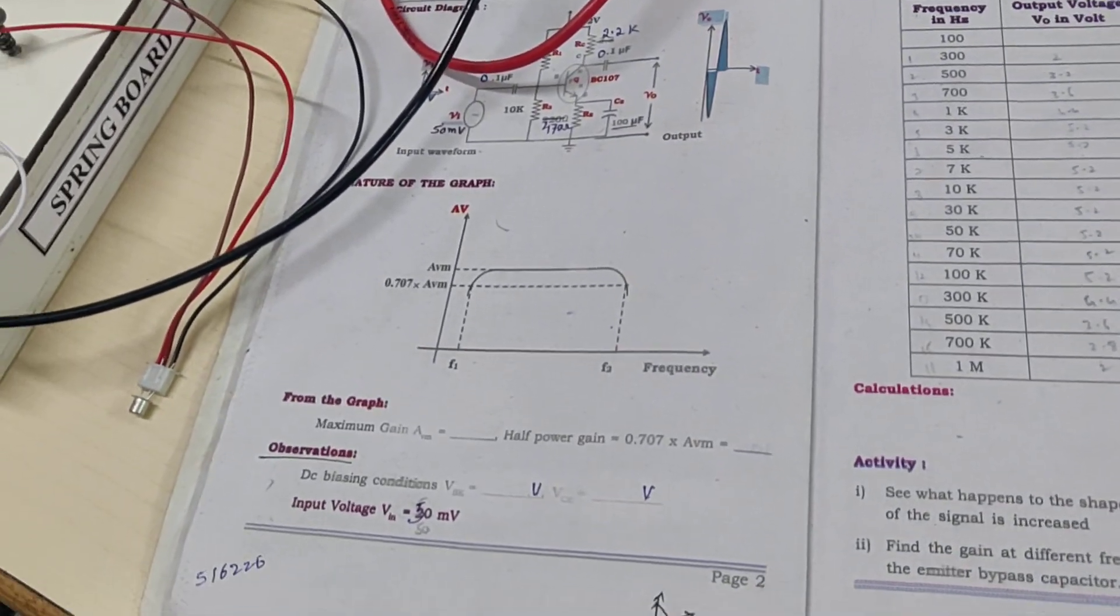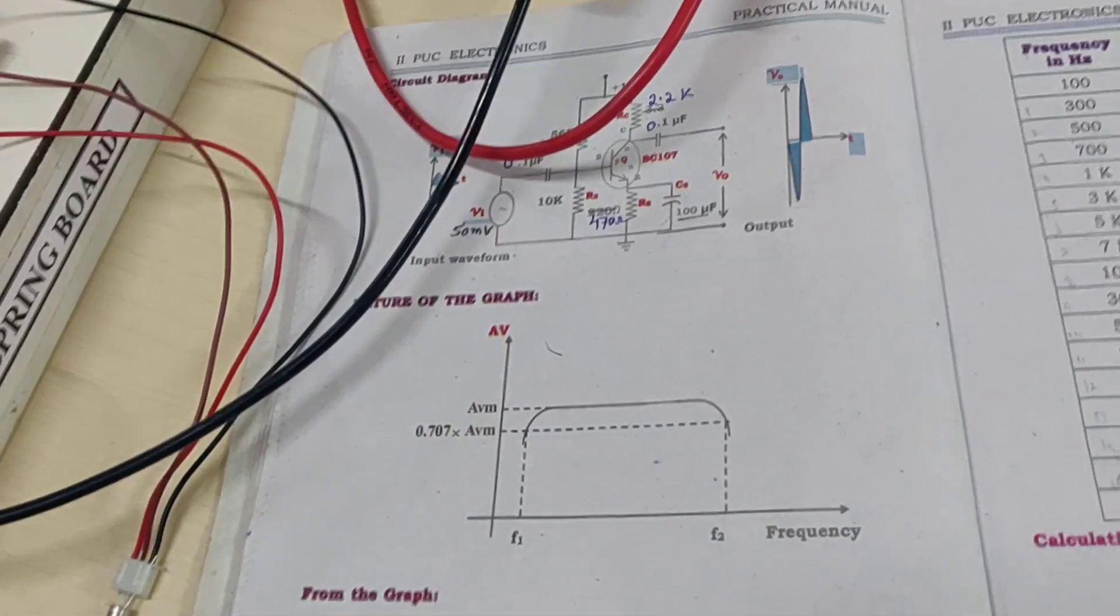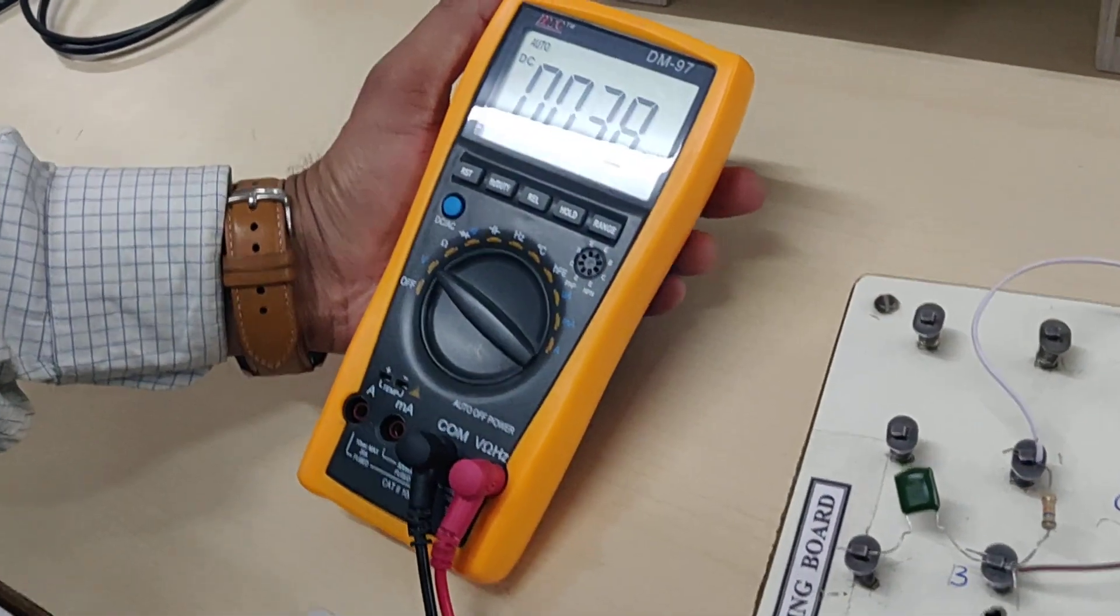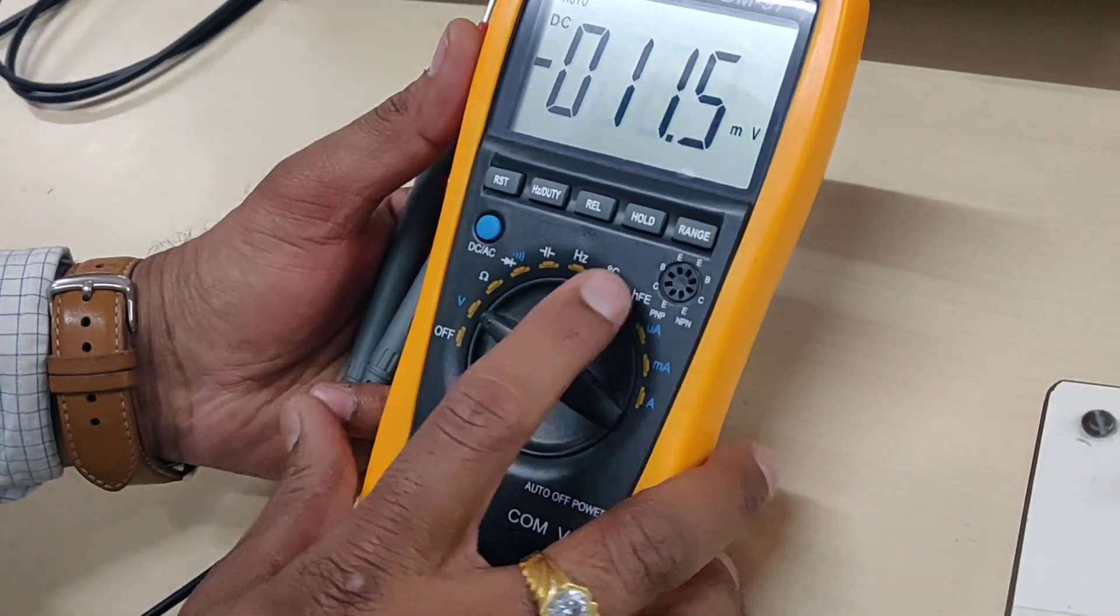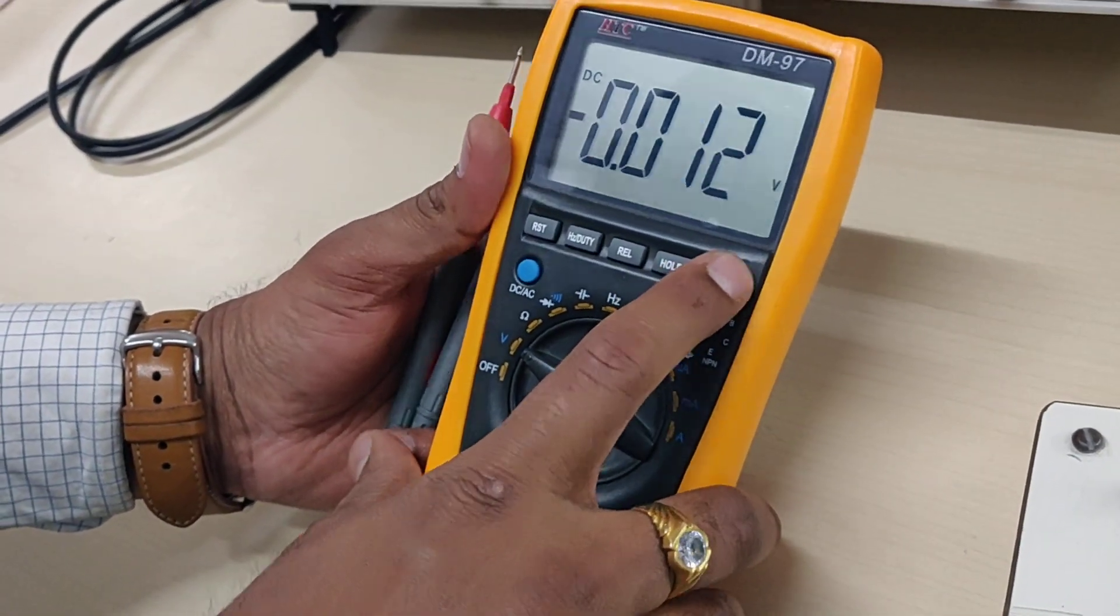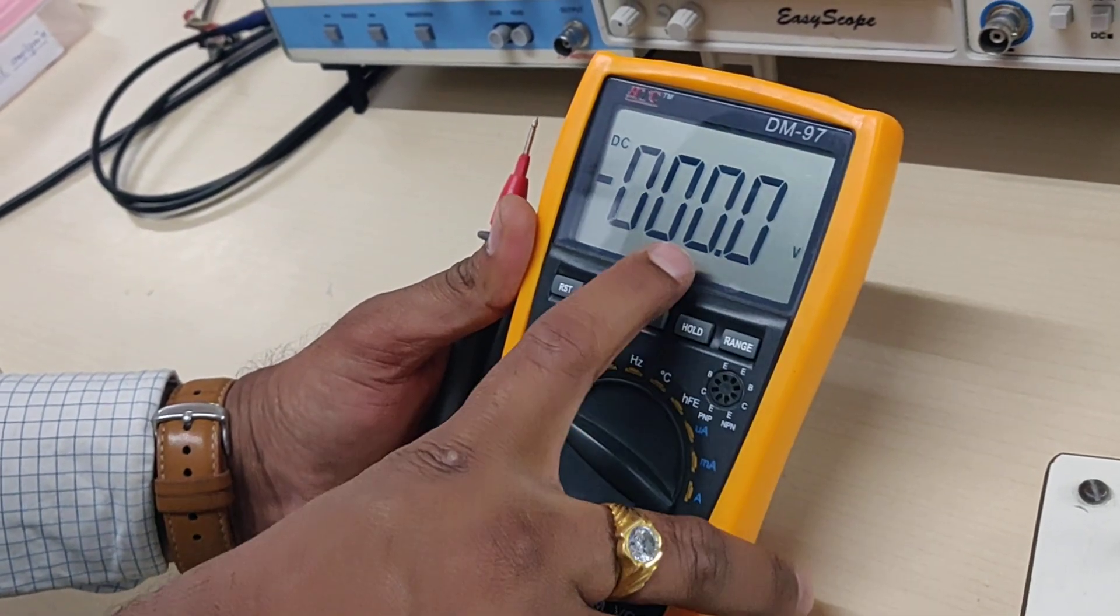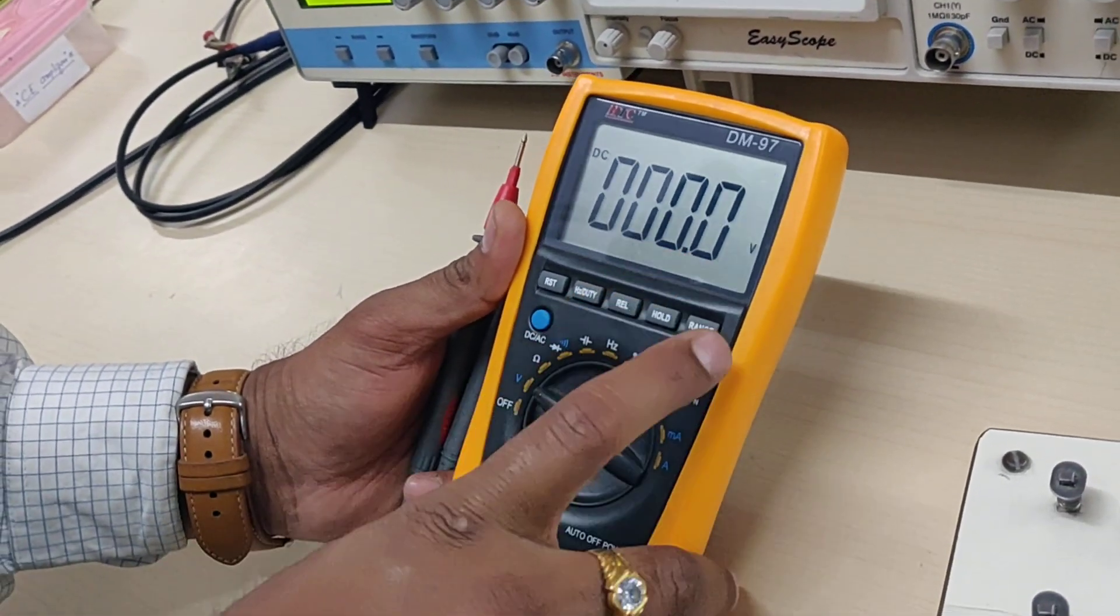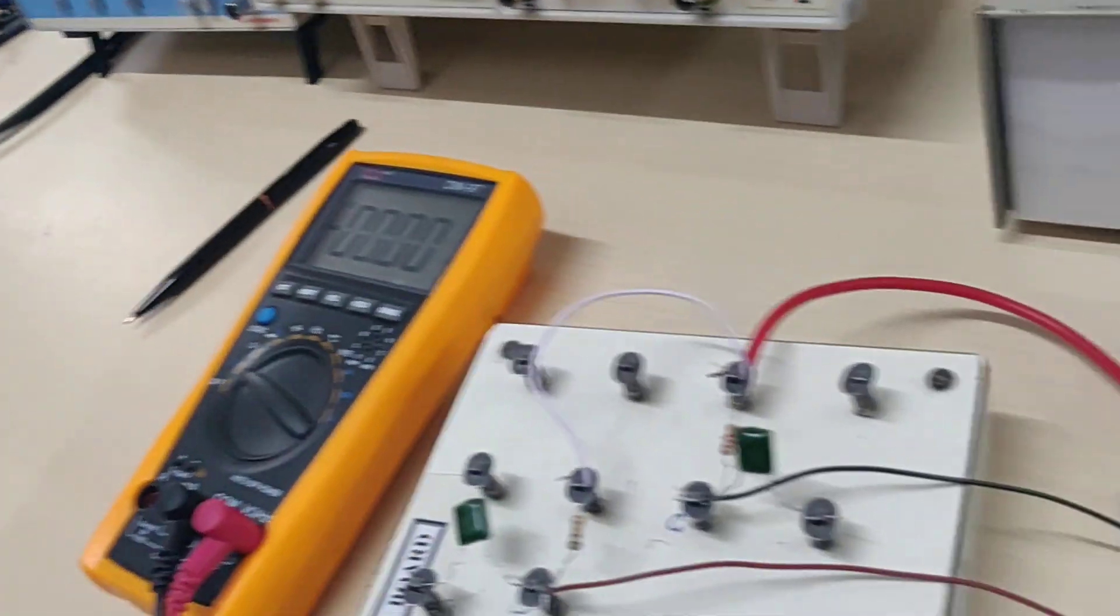Now we shall use a multimeter to measure. We can keep the digital multimeter here. The range can be selected. If I press the range button, there's double digit accuracy. If I press one more, there's single digit accuracy. We shall use double digit accuracy.